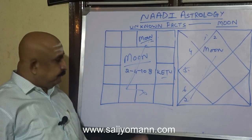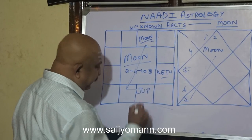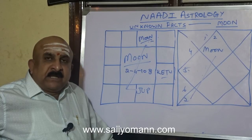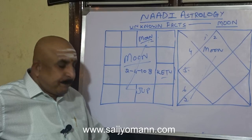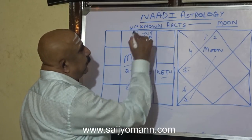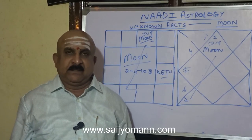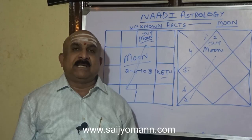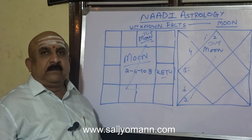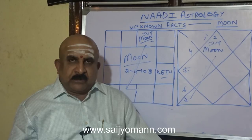If Jupiter is there in the 6th house from Moon, there will be enmity between the native and the mother. The same Jupiter, if placed with the Moon, tells us that the native and the mother look alike or have the same qualities. If it is in the 6th house there is enmity; if it is with the Moon, they will be looking alike.